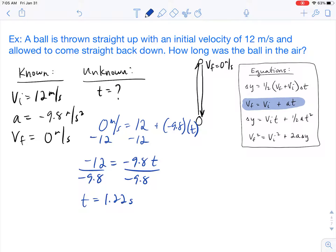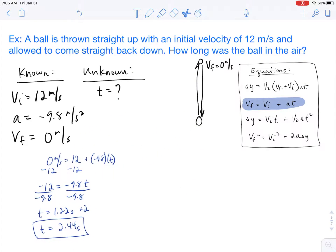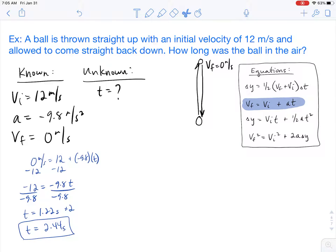Now remember, that 1.22 seconds is how long it takes just to go up. So we need to double it for the entire amount of time. So we end up with a final answer of 2.44 seconds. So that's one method of solving this problem is using that concept that the ball has to stop at the top before coming down.